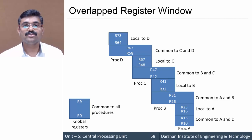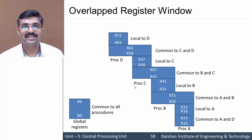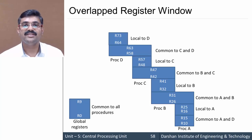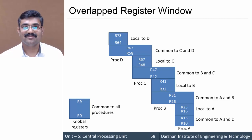For example, when procedure B calls procedure C by passing certain parameters, those arguments are common to both B and C and are stored in the common registers R42 to R47. This is how the register window is shared between procedures when they are called — a concept available in RISC type computers because the number of registers in RISC is larger.